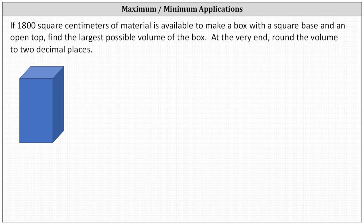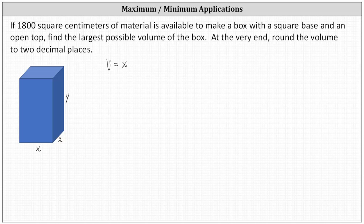Our box has a square base. Let's let the base be x by x centimeters, and let's let the height be y centimeters. We are trying to maximize the volume. The volume is equal to the length times the width times the height, or in our case, the volume is equal to x times x times y, or x squared y.